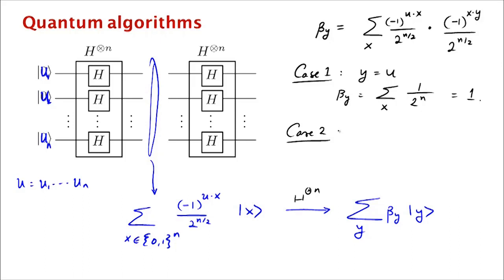Case 2 is y is not equal to u. In the case y is not equal to u, you should convince yourself that for exactly half the values of x, these two signs are unequal. So you get plus 1 half the time, minus 1 half the time, so beta sub y ends up, half these values cancel with the other half and you get beta sub y equal to 0. So you get completely destructive interference.